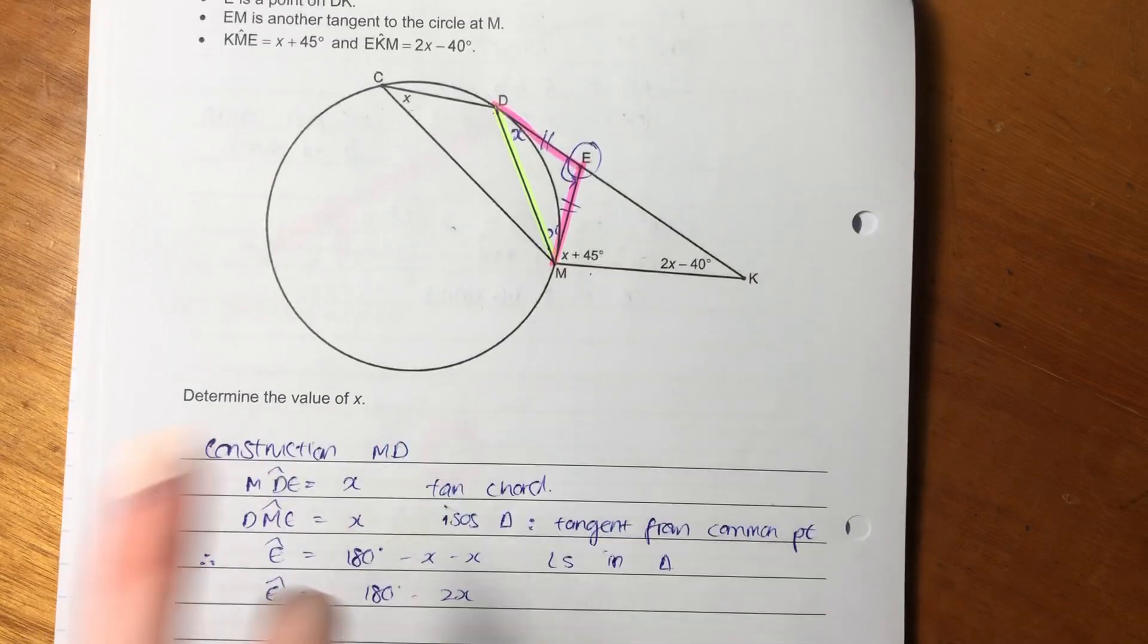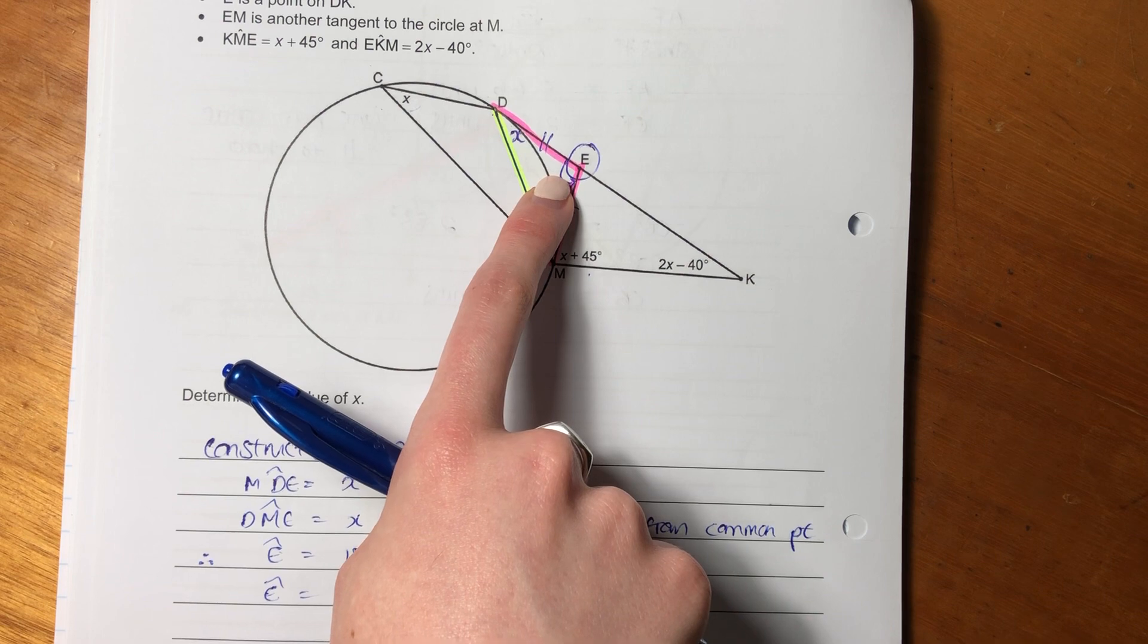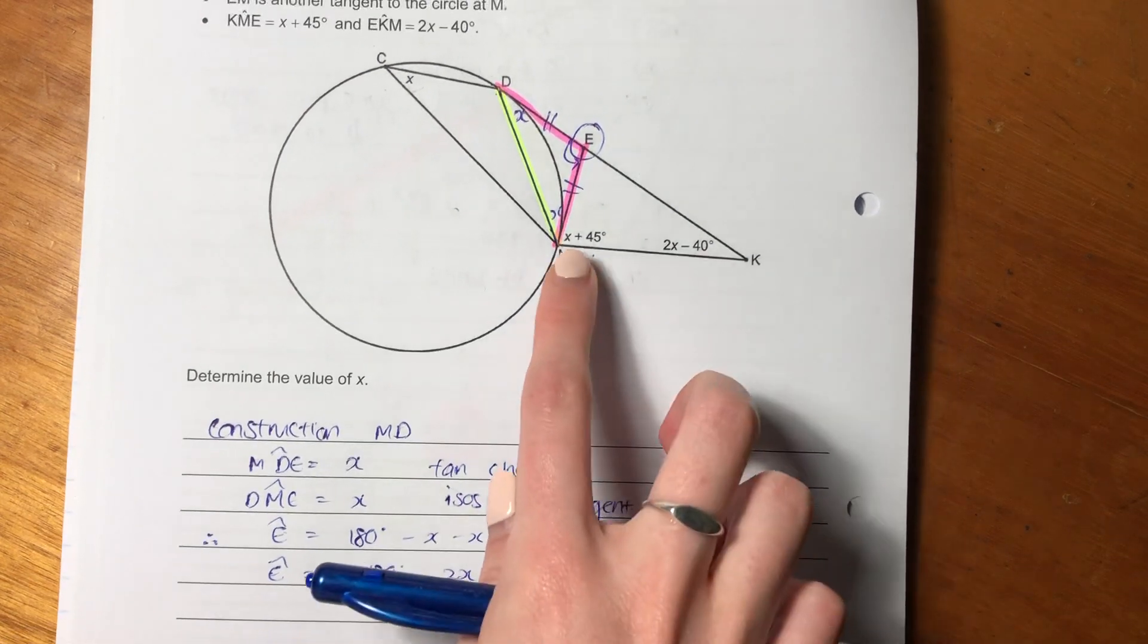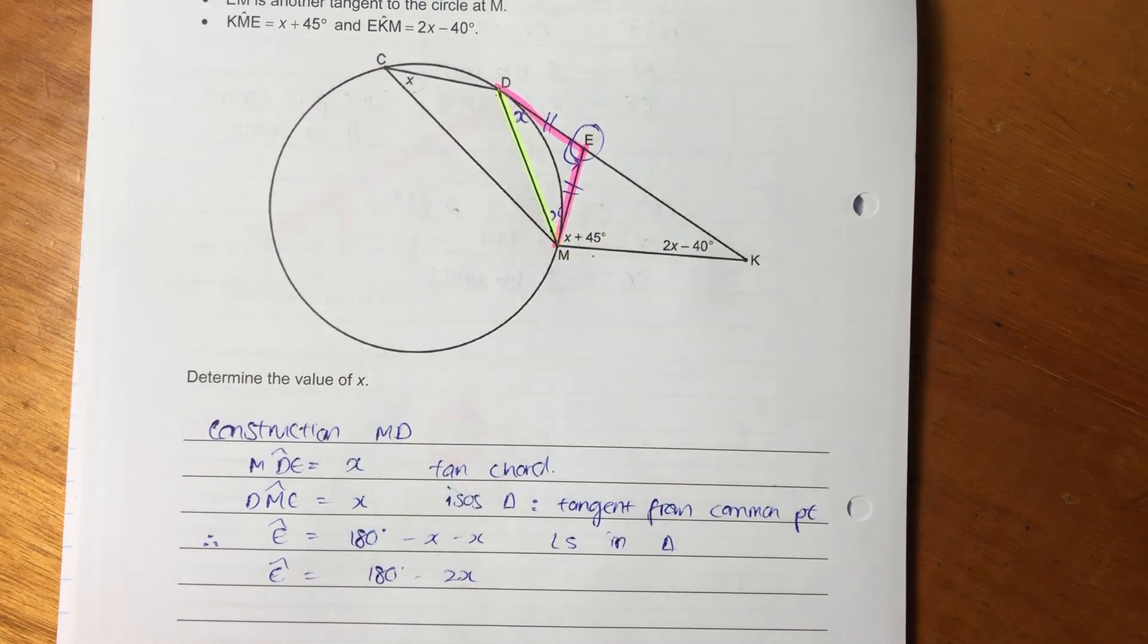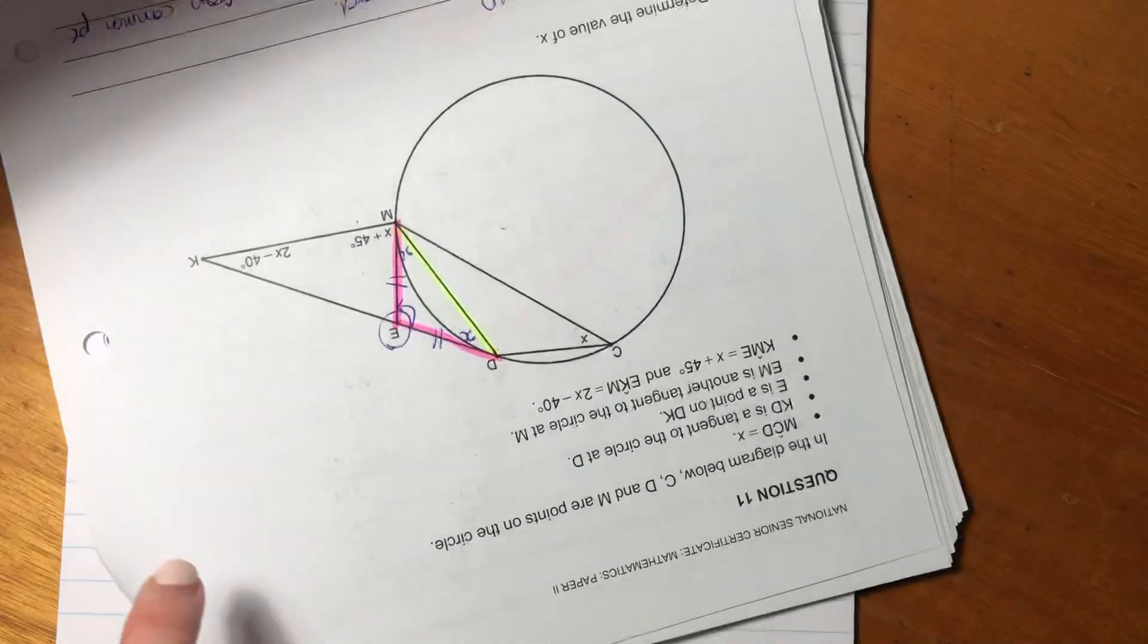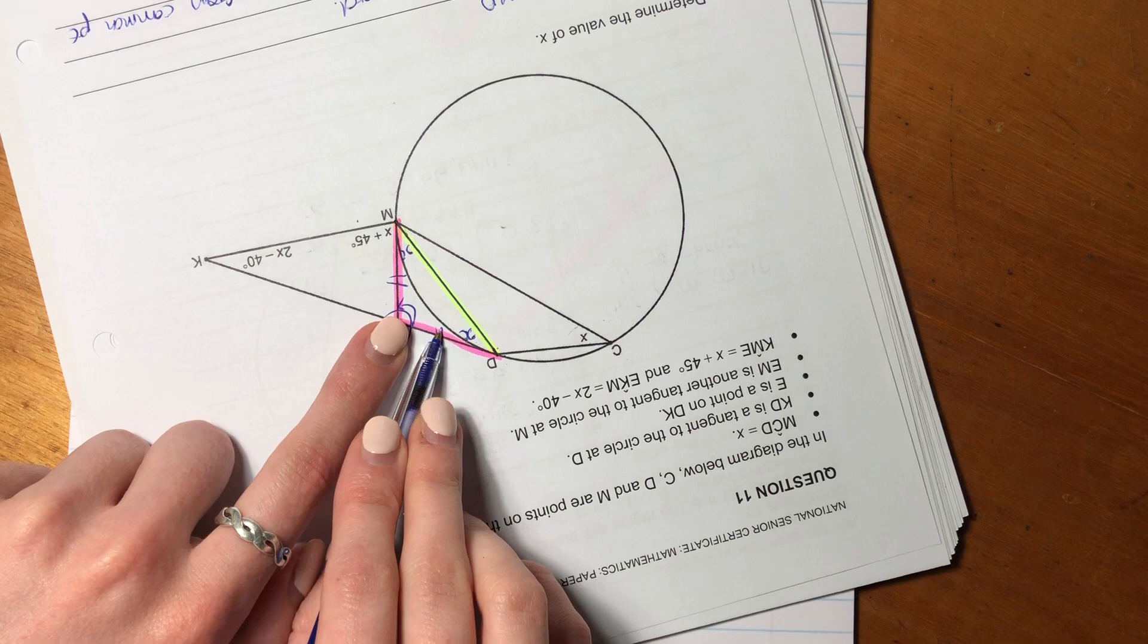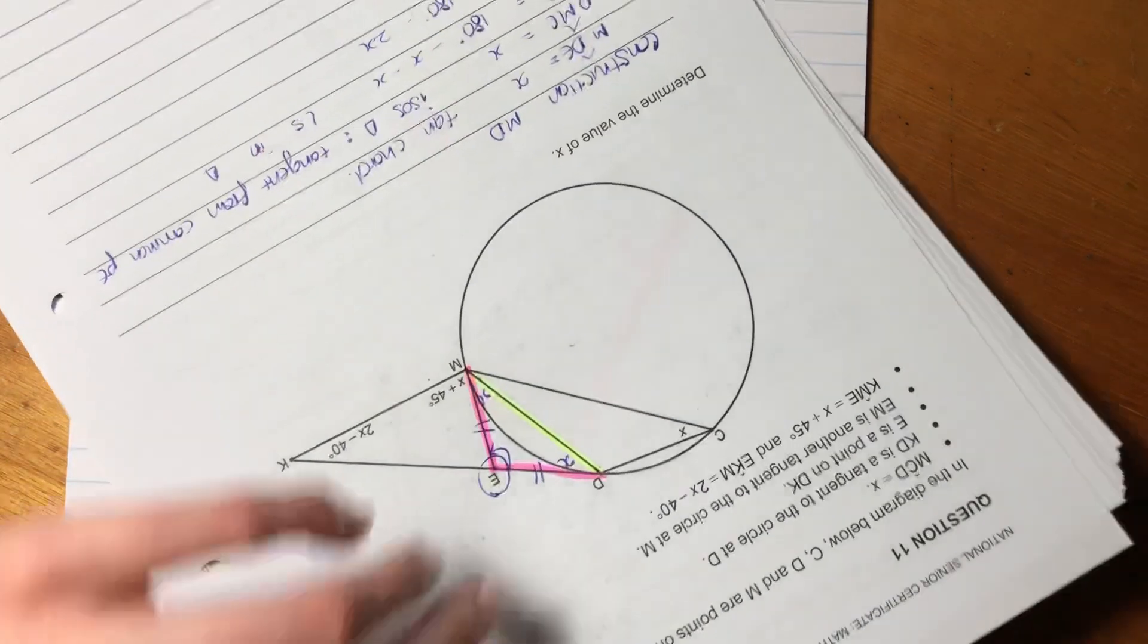So, but now what we can see, which is fantastic, is E is actually an exterior angle to this triangle here. So 180 minus 2X will equal the sum of those two because of exterior angles in a triangle. Remember, exterior angles of a triangle is an underrated reason. But sometimes it pops up here and there. So it's important to remember that. So if you don't see that, switch it around, you'll see exterior angle, and remember, exterior angle says the exterior angle of a triangle is equal to the sum of the opposite two interior.